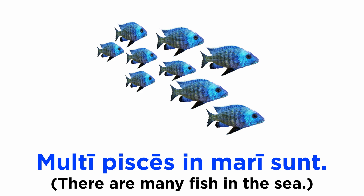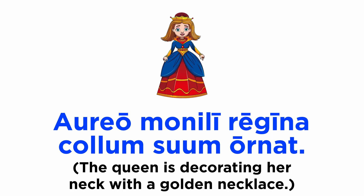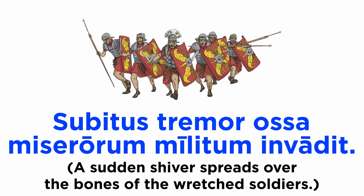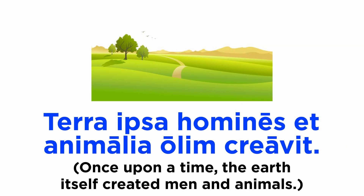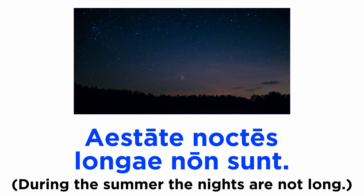Now let's see some of these words in action. Multi pisces in mari sunt. Canes, animalia fidelia ac utilia, homini sunt. Aureo monili regina collum suum ornat. Subitus tremor ossa miserorum militum invadit. Terra ipsa homines et animalia olim creavit. Animus eius errat ignarus artium malarum. Aestate noctes longae non sunt.